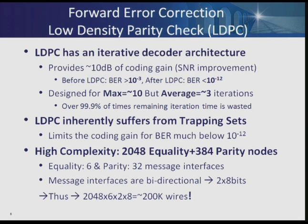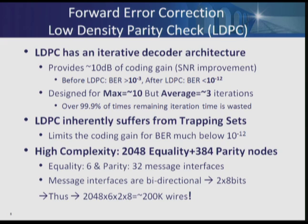LDPC code structures in general have trapping sets — specific code words which are always undecodable, but the probability of those code words occurring is small. That's why you still get better than 10 to the minus 12 bit error rates. We do have a technique to detect and correct them. Given the LDPC's 2048 equality and 384 parity nodes, if you just want to do a pure parallel implementation with the 200,000 wires needed for message passing, it makes it impractical.